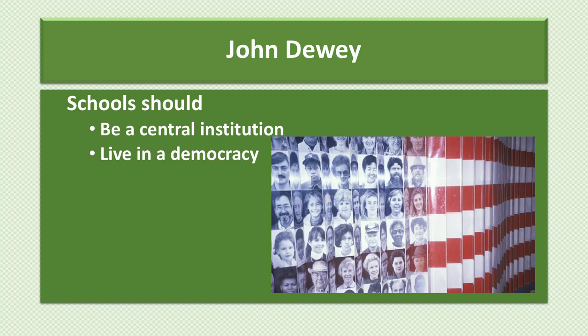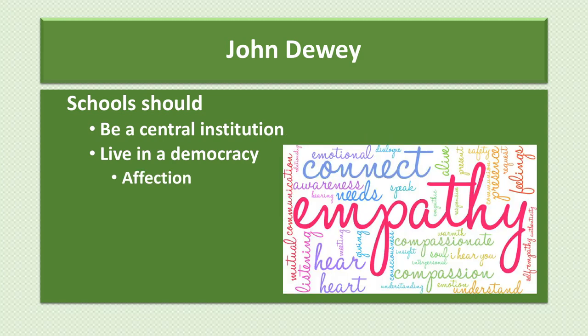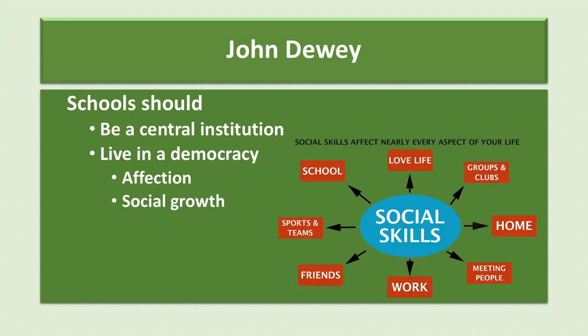He thought that democracy was not easy to achieve and could be easily lost, and that effort must be given to make sure that people were prepared to keep its primary institutions functioning and developing. In order to do that, Dewey believed that three primary sets of knowledge and skills should be developed. The first attribute Dewey emphasized was the development of what he called affections, by which he meant emotions such as empathy as well as values important for social functioning. He also believed that the development of social skills should be emphasized, as these are important for many aspects of human lives, including doing well in school, making and keeping friends, starting and maintaining a family, and doing well in one's career.